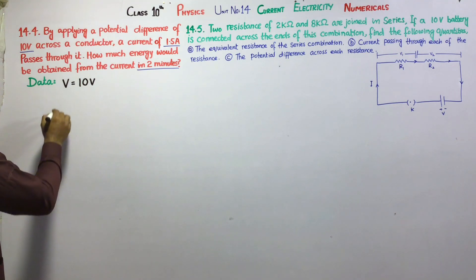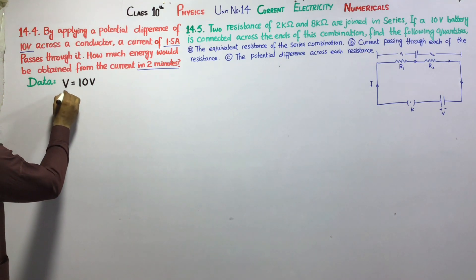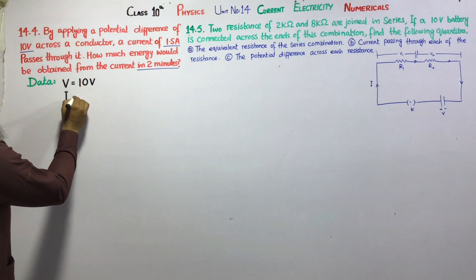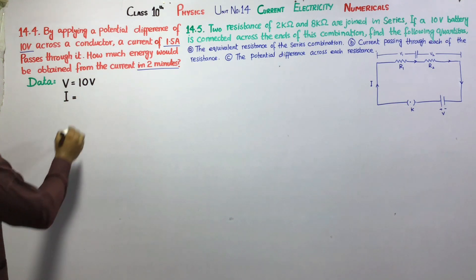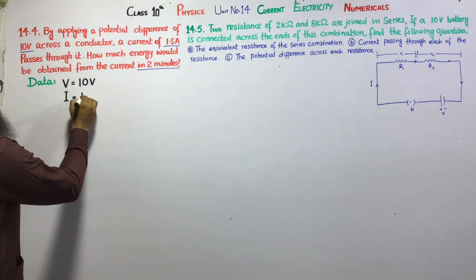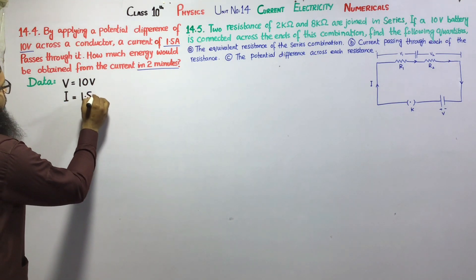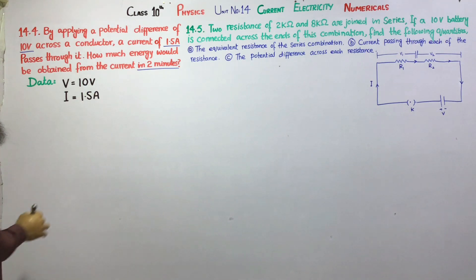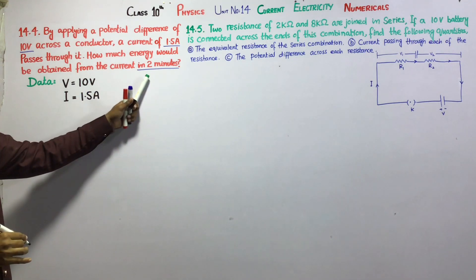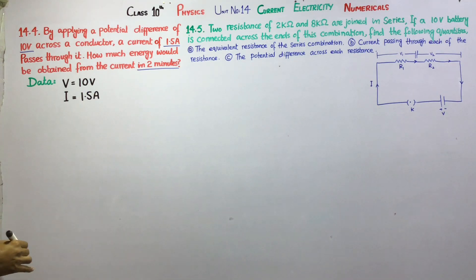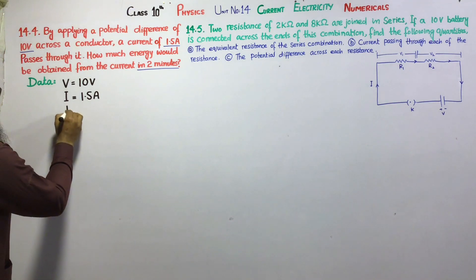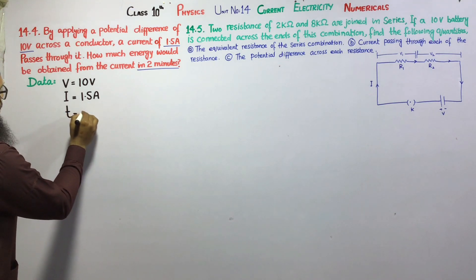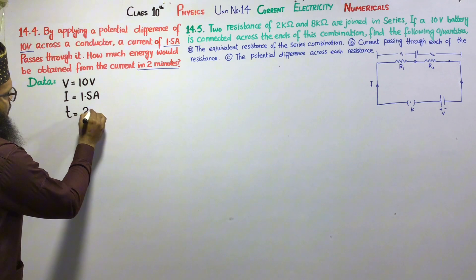Now, we have current given. Current — we represent it as I. How much? 1.5A. Next, time given: time is equal to 2 minutes.